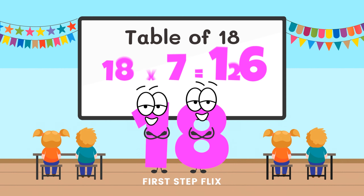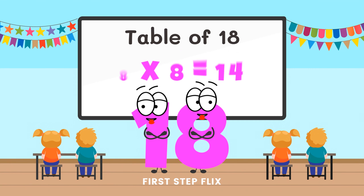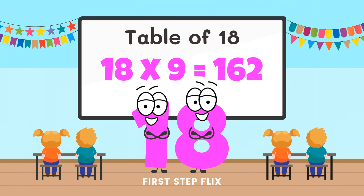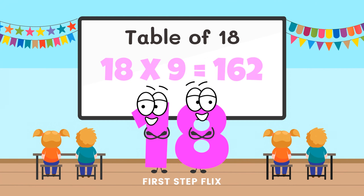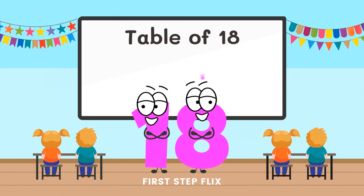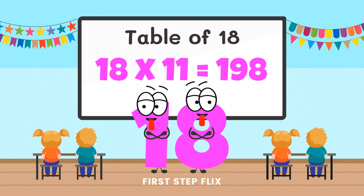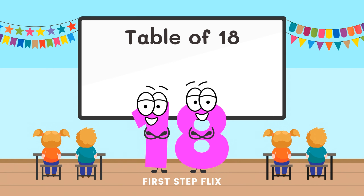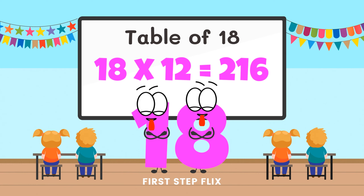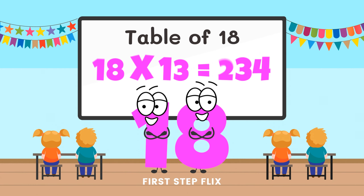18 sevens are 126. 18 eights are 144. 18 nines are 162. 18 tens are 180. 18 elevens are 198. 18 twelves are 216. 18 thirteens are 234.